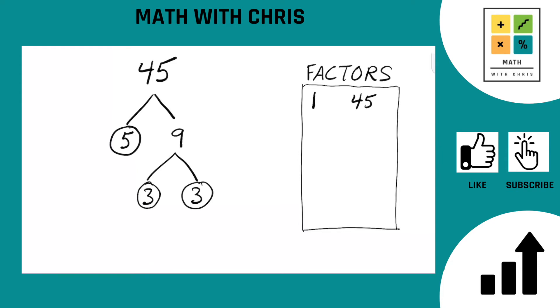We are now done with the factor tree as every branch you take, any path you take, ends with a circled prime number. So that's it. We have 3, 3, and 5.